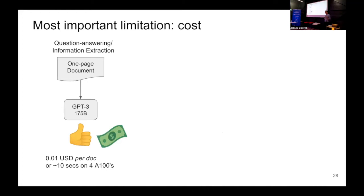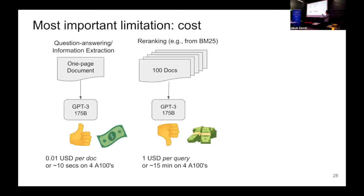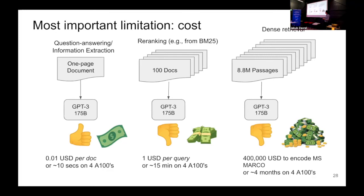Among all the limitations, cost is one of the biggest concerns. For a single-page document fed to GPT-3 (175 billion parameters) via the OpenAI API, it costs about one cent per document — about 10 seconds on 4 A100s. But for retrieval tasks, if you ask GPT-3 to re-rank 100 documents retrieved by BM25, it costs $1 per query or 15 minutes on 4 A100s. For dense retrieval — converting all passages in the MS MARCO dataset to a single vector — it would cost $400,000 using the OpenAI API, or four months on 4 A100s. So it's a pretty bad idea to use these models on large collections.